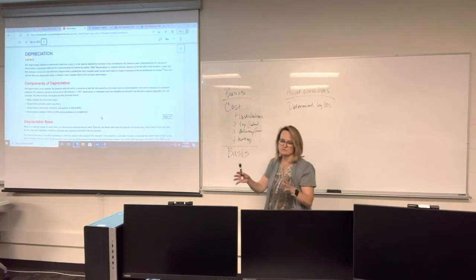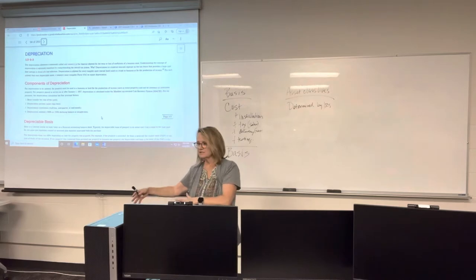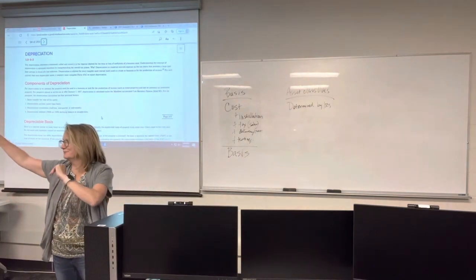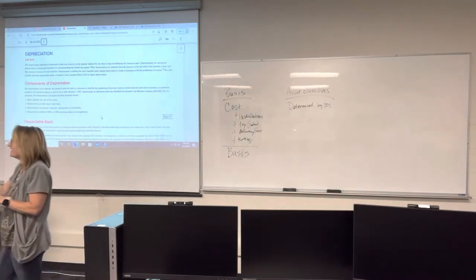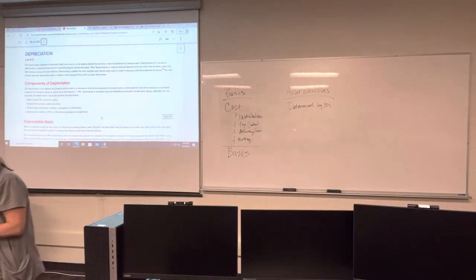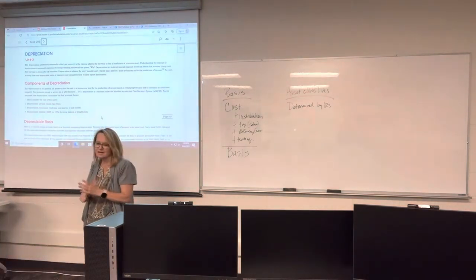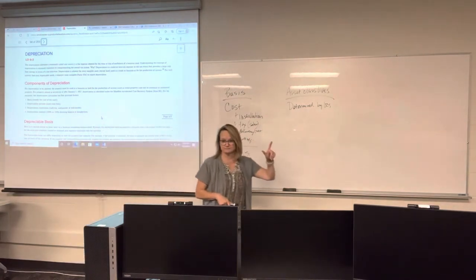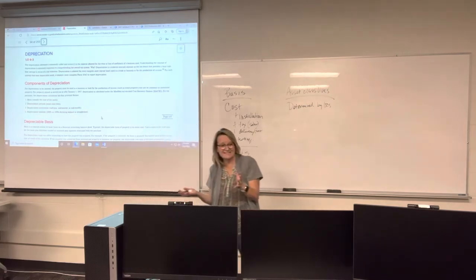The IRS calls these 'asset class lives' because the assets are in separate classes. You've got three-year class lives, five-year, seven-year — the most common — ten-year, fifteen-year, twenty-year. We also have 27-and-a-half-year and 39-year classes. The amount of time you depreciate an asset over is dependent upon what class it's in, and the IRS tells you what class it's in.